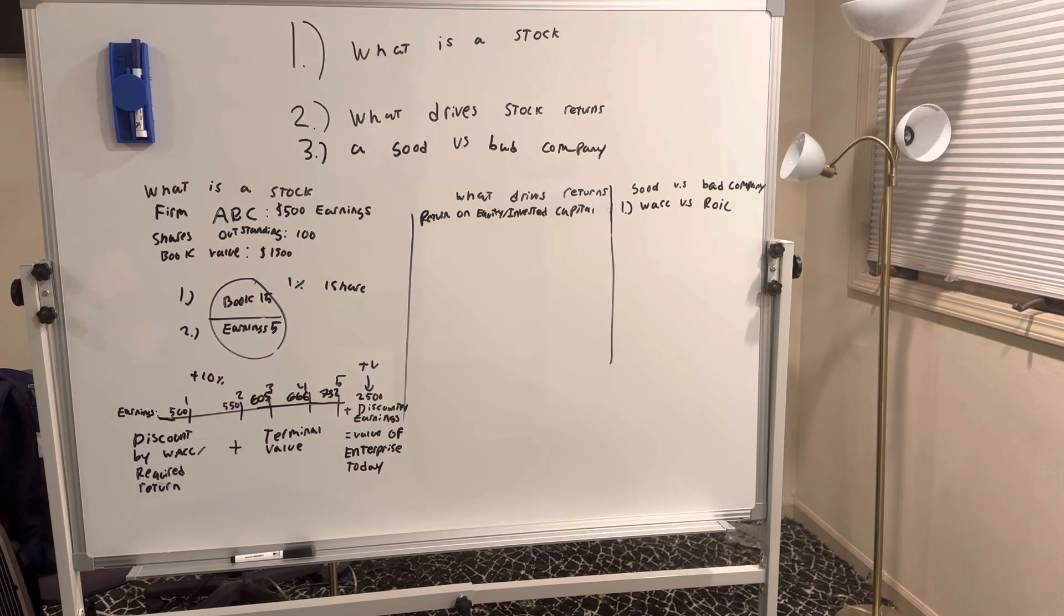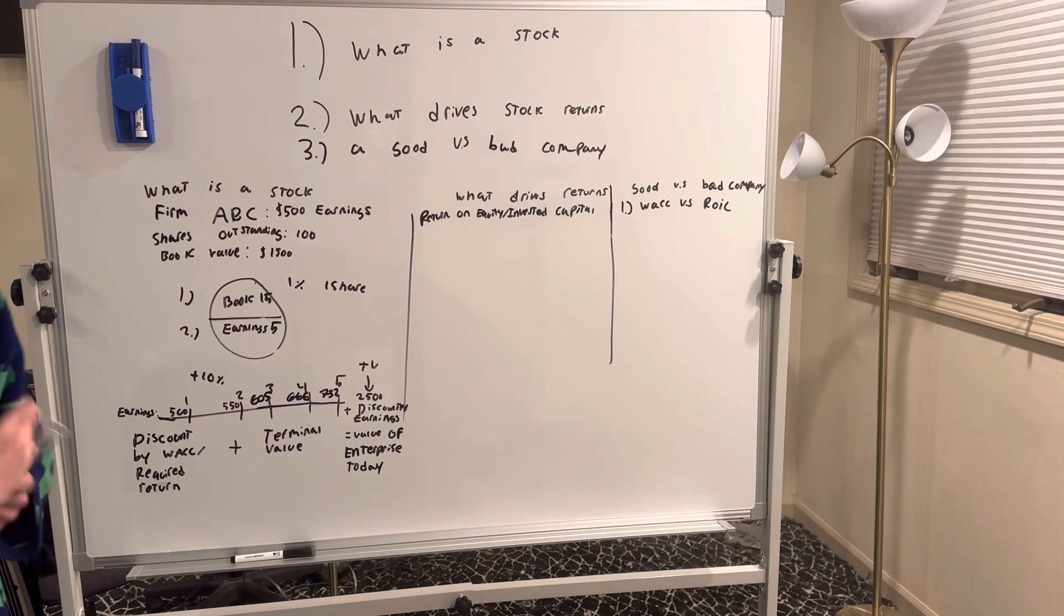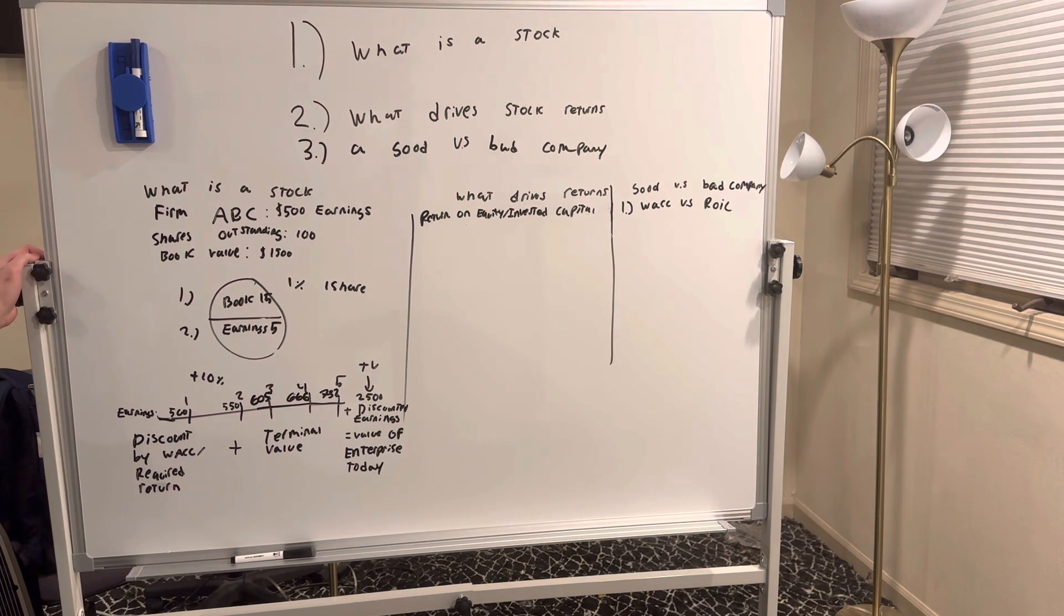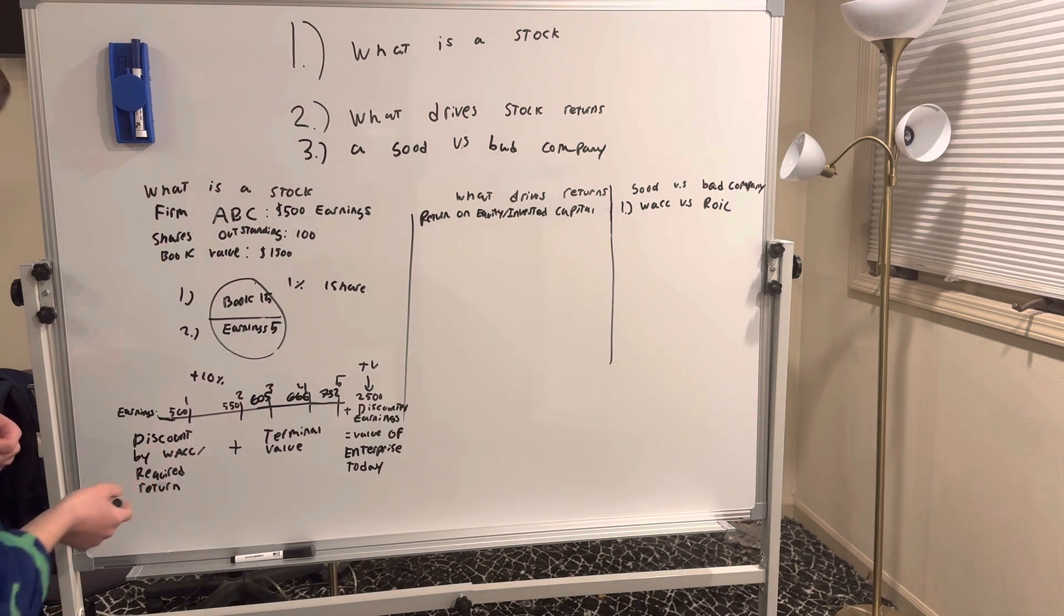So what is the WACC? That's the weighted average cost of capital. It takes into account what stockholders expect to receive and what bondholders expect to receive, and we weight it. I'm not going to do it right here, but I'll do that in another video. For example, it might be 8%, or you can just use your own required return if you want.